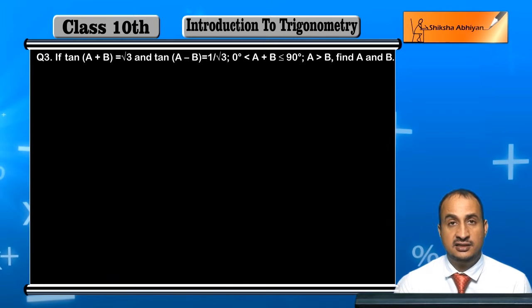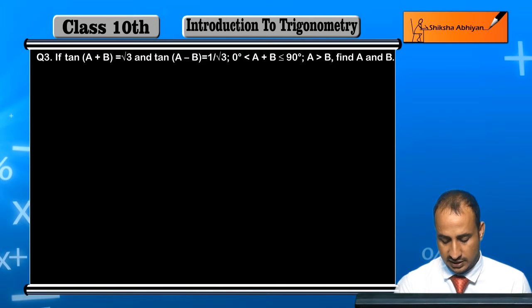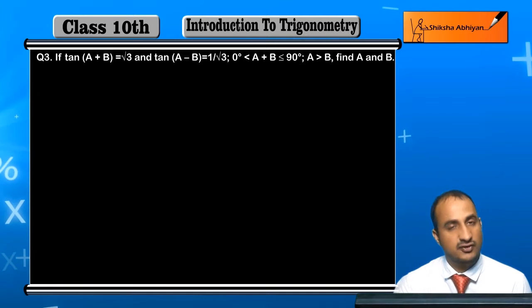...meaning A + B is an acute angle, less than or equal to 90° and greater than 0°. And here it's given that A is greater than B, so angle A is greater than angle B. Find A and B - you have to find the values of A and B.